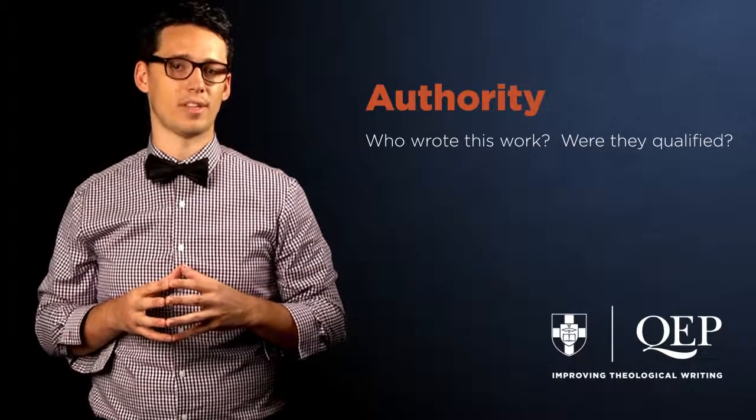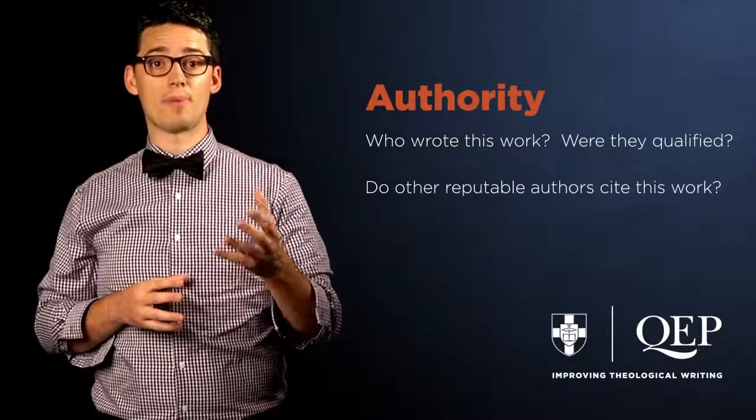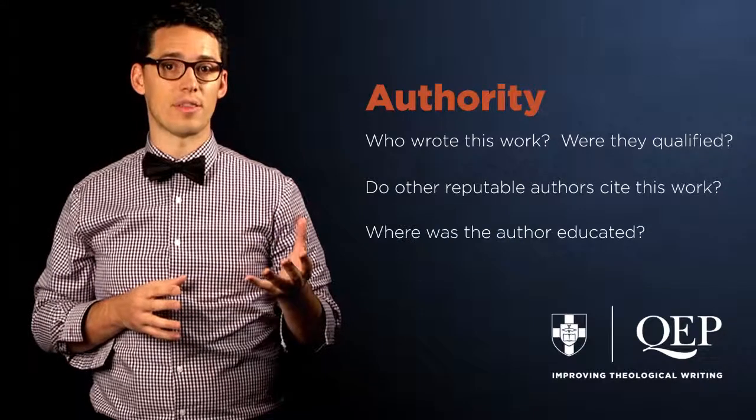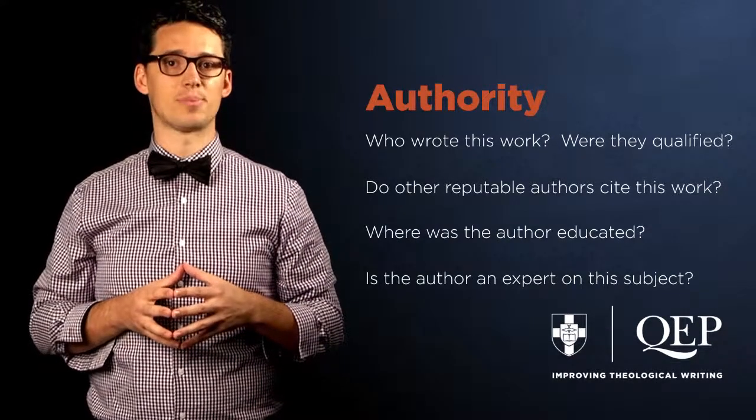When selecting a work, think about its authority. Ask questions like: who wrote this work and were they qualified to write it? Do other reputable authors cite this work? Where was the author educated? And is the author an expert on this subject? When selecting journal articles, ask whether or not the journal is peer reviewed. Peer review is a process by which submitted articles are evaluated by a scholar's peers, ensuring that the research reflects the best scholarship available in a given field. You may find it helpful to contact a research expert in the library to help you find peer reviewed articles in your field.